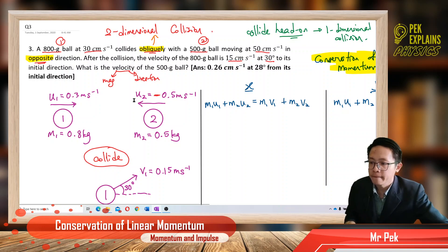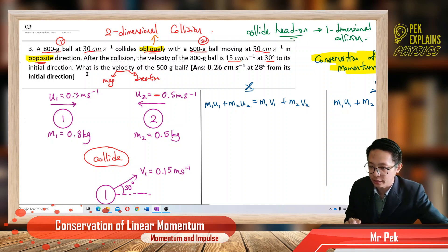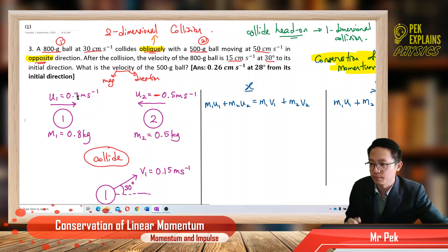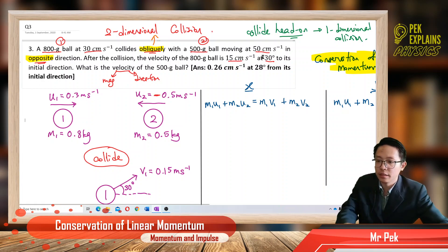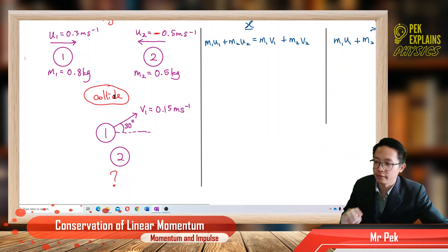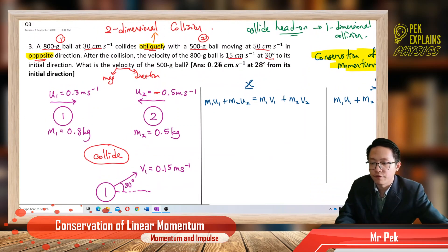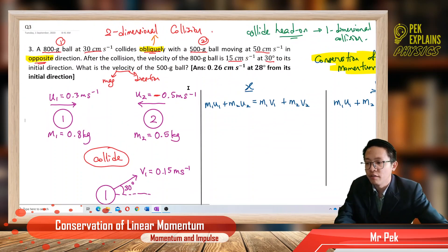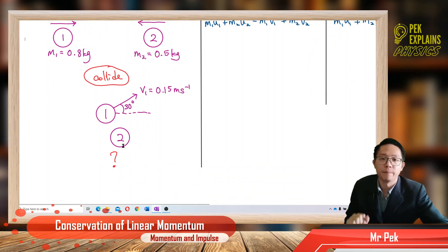The important thing — just as stated — the 500-gram ball is moving in the opposite direction. So when it's the opposite direction, the initial velocity of ball two, you need to put a negative sign. Opposite direction means to the left; you must put a negative sign. For ball one, it's moving to the right, so it's positive. After the collision, we have the final velocity and direction: ball one has a final velocity of 0.15 meters per second at 30 degrees to the initial direction. We want to find the velocity of ball two.